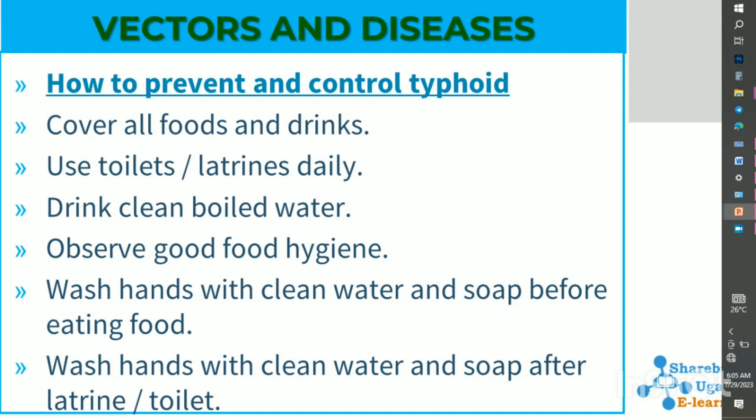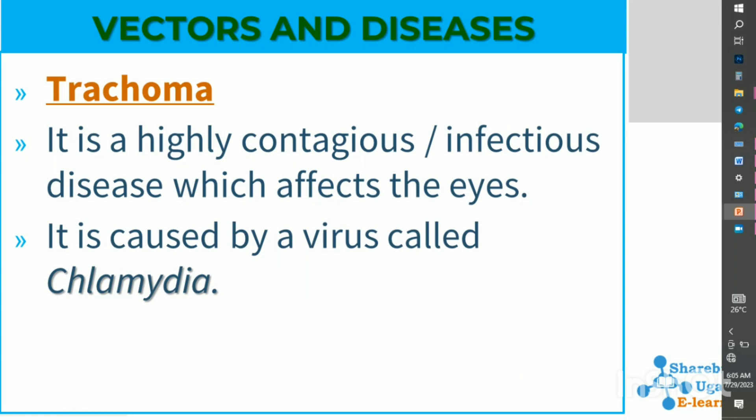We also prevent typhoid by observing good food hygiene, washing hands with clean water and soap before eating food, and washing hands with clean water and soap after visiting a latrine. Another disease caused by houseflies is trachoma, which is a highly contagious and infectious disease that affects the eyes.